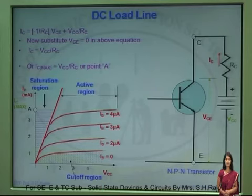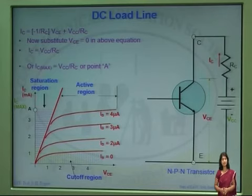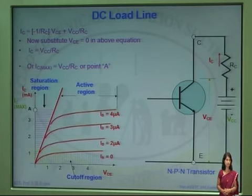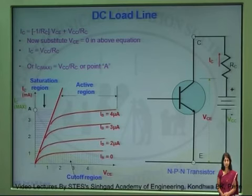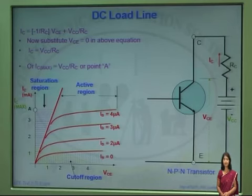Let's consider this point as point A on the output characteristics curve, that is the Ic versus Vce plot. Considering the same equation again: Ic equal to minus 1 by Rc into Vce plus Vcc by Rc. If I put Ic equal to 0 in this equation, I get Vce equal to Vcc.